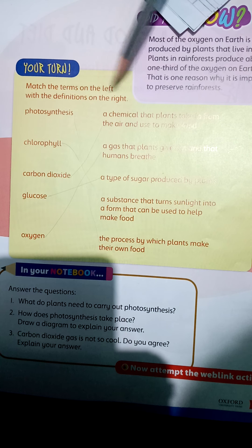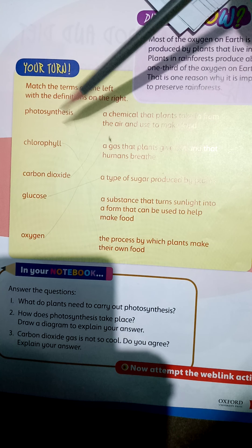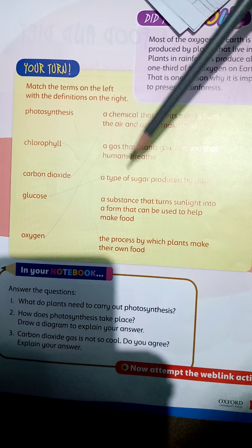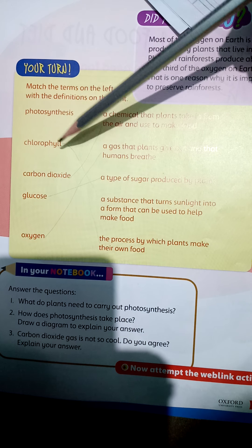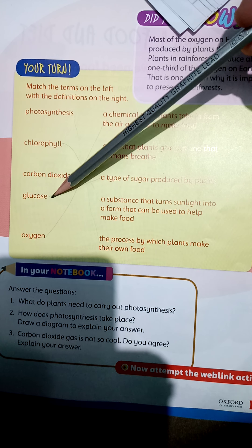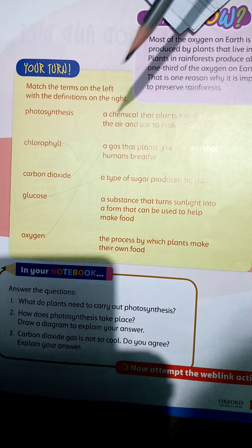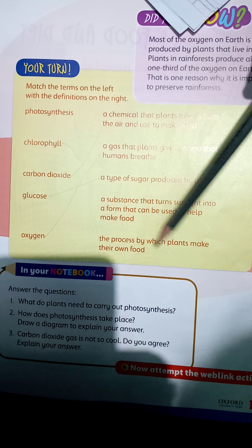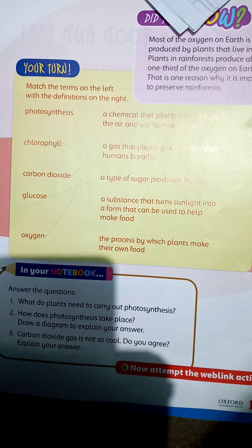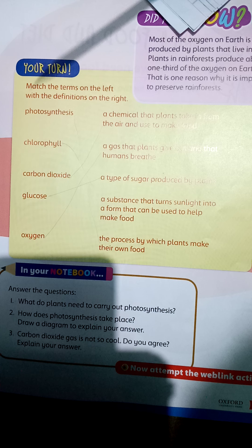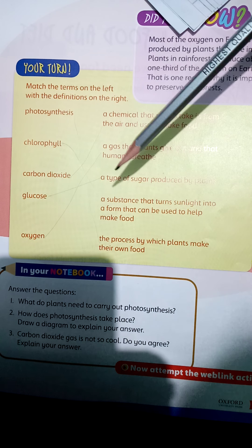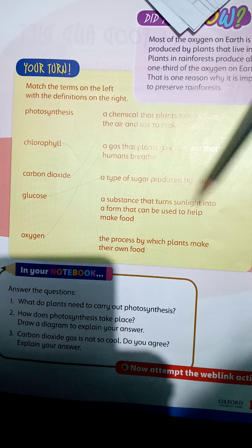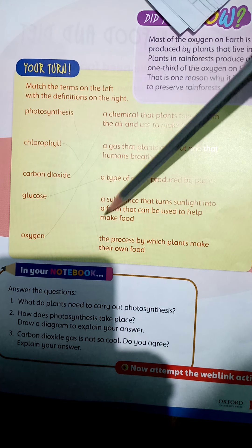In our textbook, we also have a column matching activity. Match the terms on the left with the definitions on the right. Terms: photosynthesis, chlorophyll, carbon dioxide, glucose, and oxygen. Photosynthesis is the process by which plants make their own food. Chlorophyll is a substance in leaves used during the preparation of food — it turns sunlight into a form that can be used to help make food.